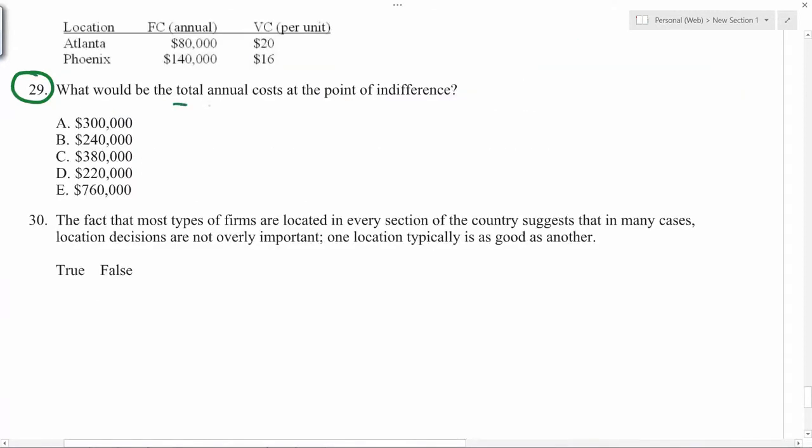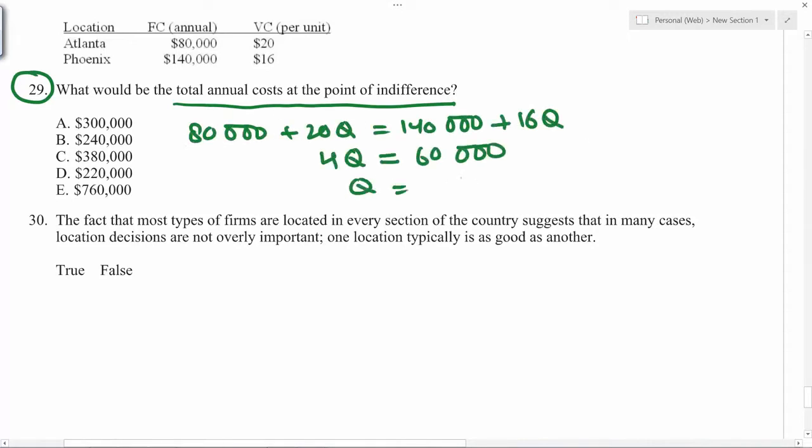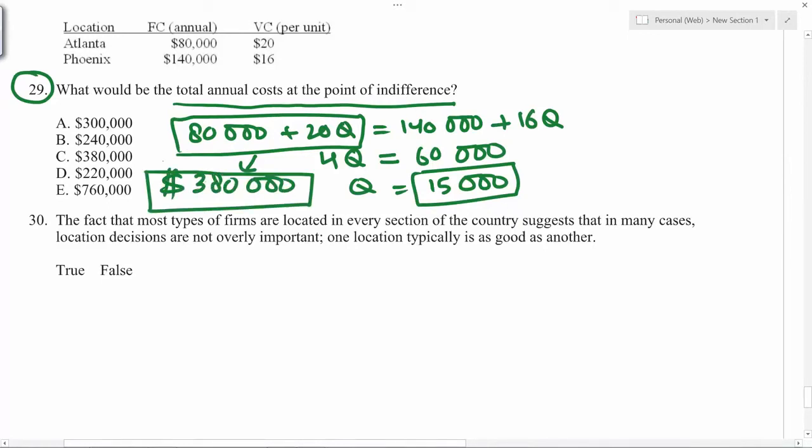Total annual cost at the point of indifference: first we need to find the point of indifference. If we replace this in any one of the two cost equations, let's say this one, that will give you 380,000 dollars as the cost. So the correct answer is C.